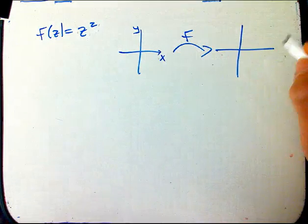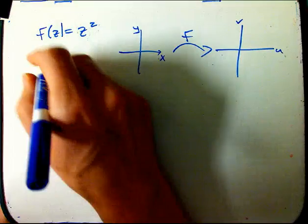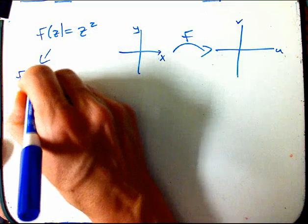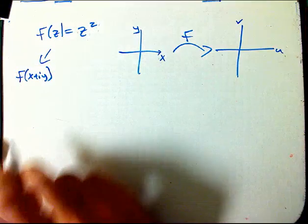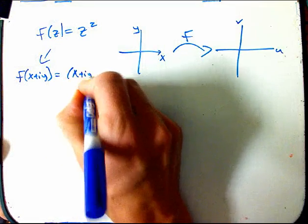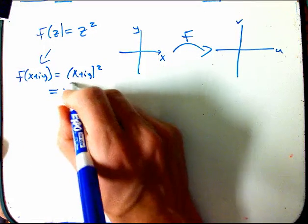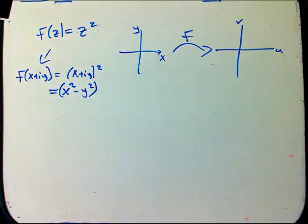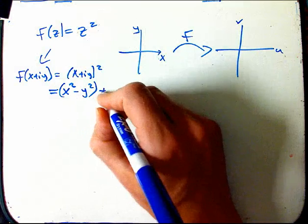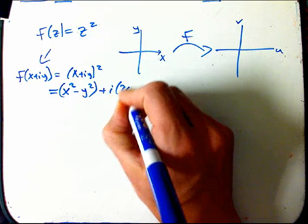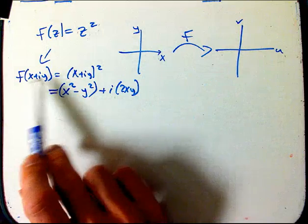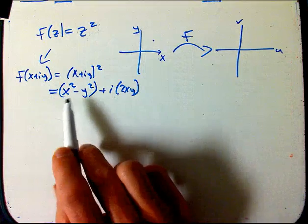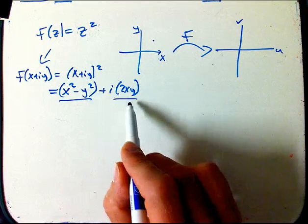We've got x and y on the input and u and v on the output. To get an idea of what the mapping looks like, we need to write it in terms of x's and y's. That's (x + iy)². If you FOIL that out, you get x² and (iy)² which is −y², since i² = −1. The cross terms are just i times 2xy. So I've separated the real and imaginary parts of both the input and the output.